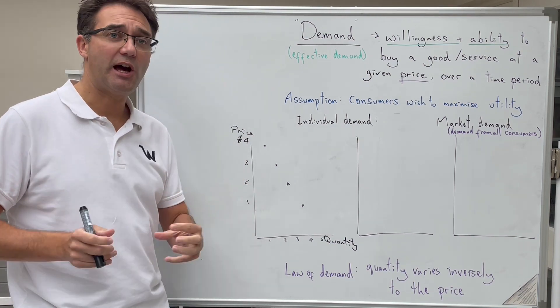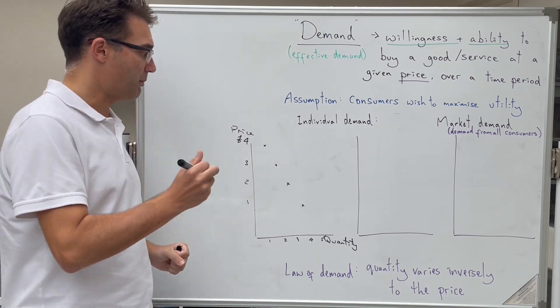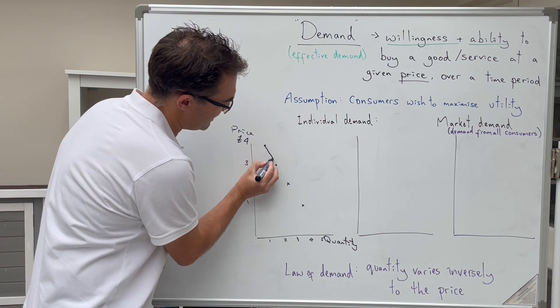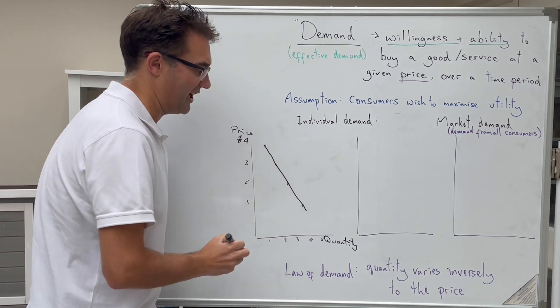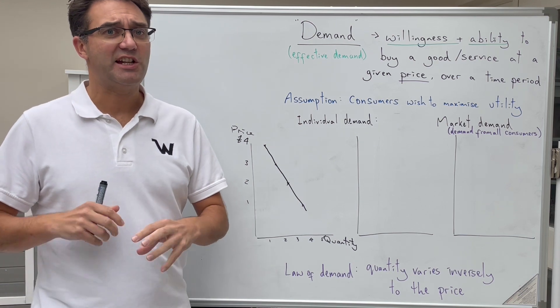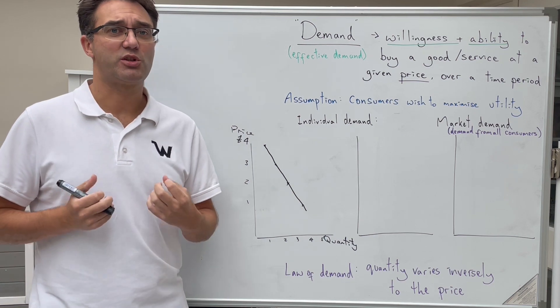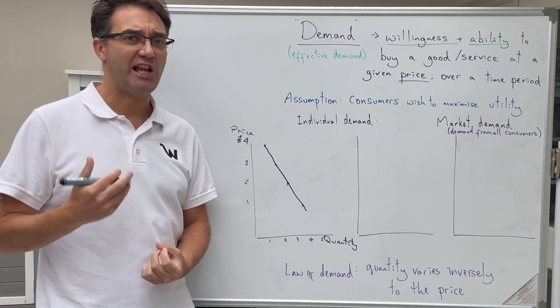What we can then do is we can join up these points to create our very first individual demand curve. The way we do that is we simply join them together. Sometimes it's a straight line, sometimes it actually is a curve, but whatever we use, we use the term demand curve or sometimes demand schedule.